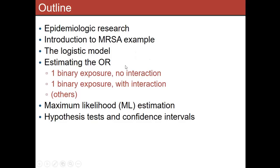We'll talk about an example that we're going to use for a few lectures, then go into the logistic model and how we use it. One of the primary things we're going to be interested in for a while is the odds ratio. We'll talk about how we use that model to estimate the odds ratio, which is a quantity you've seen before. We'll also go into hypothesis testing and confidence intervals — how do we do statistical inference on the odds ratio with the logistic regression model?